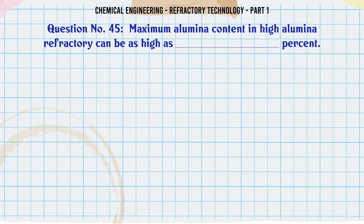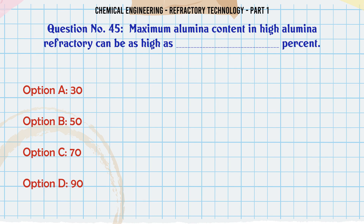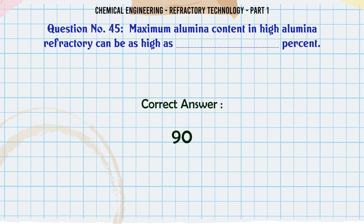Maximum alumina content in high alumina refractory can be as high as ___ percent. A. 30, B. 50, C. 70, D. 90. The correct answer is 90.